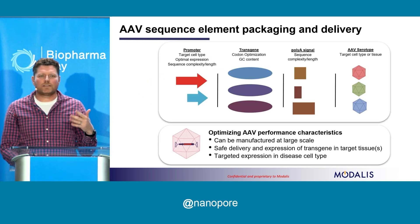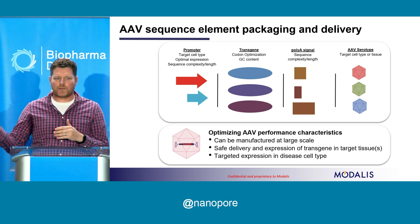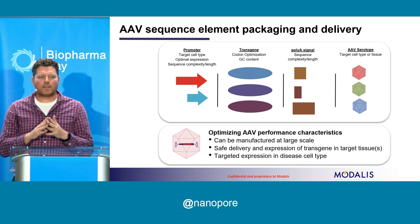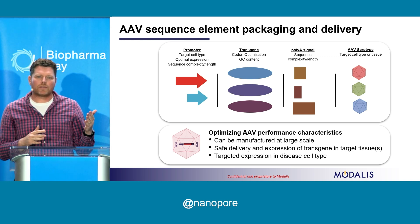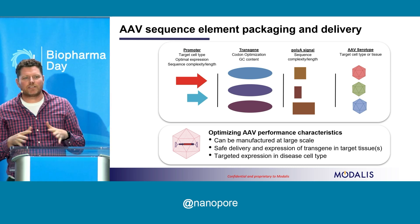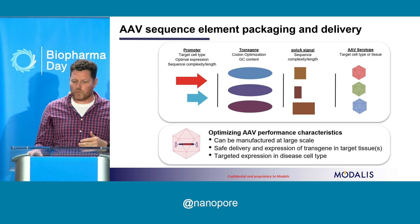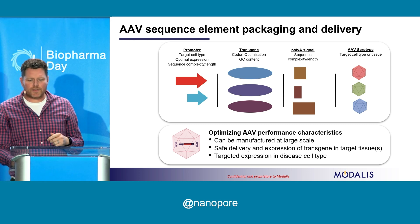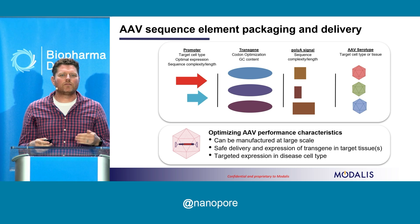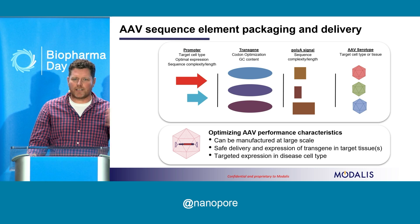Generally speaking, we package promoters — which might need to be specific for the target tissue or cell type — transgenes that might need sequence optimization for codon usage and splice site removal, and polyadenylation signals. Promoters and polyadenylation signals can have a lot of sequence complexity, and this sequence complexity isn't always compatible with AAV genome replication. Throughout this talk, I want to show how we've been using nanopore sequencing to understand sequence complexity that might not be compatible, as early stage as possible.